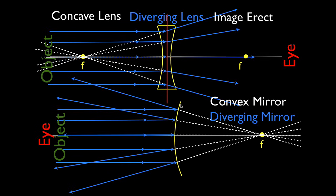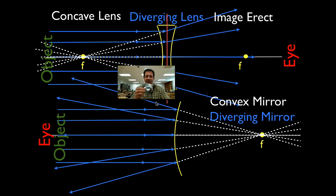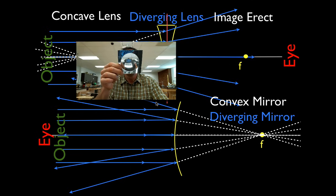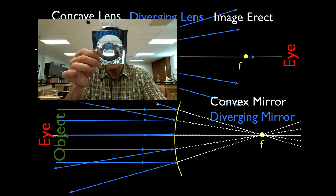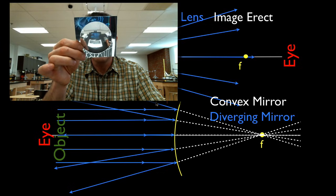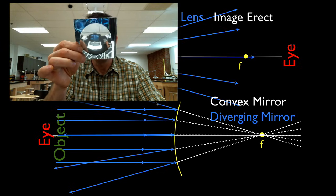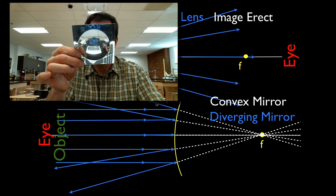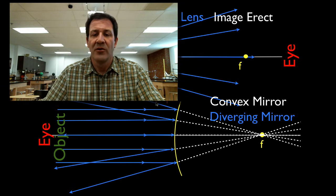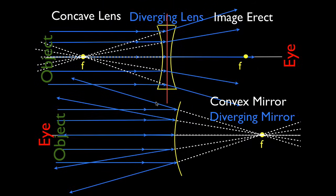The light rays appear to come from behind the mirror — but do they actually come from behind the mirror? Of course not; a mirror is a solid object you cannot see through. But your eye thinks they come from behind the mirror. If you look carefully at the convex mirror, the image looks like it's behind the mirror — but it's not. That is again a virtual image. Regardless of where we place the object, it will always appear right side up, and it will always be a virtual image.